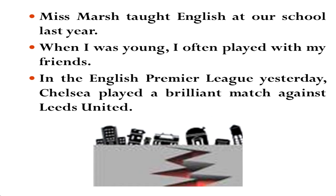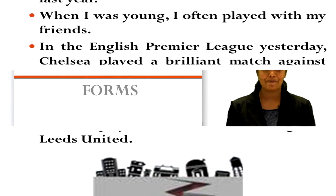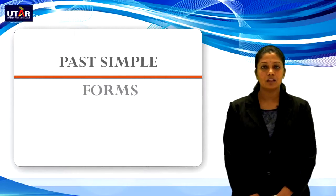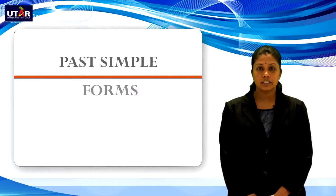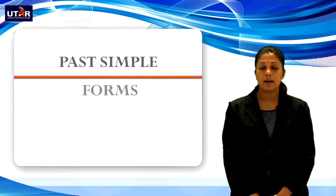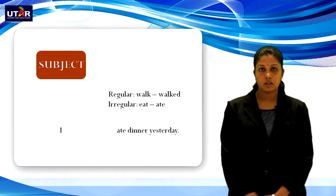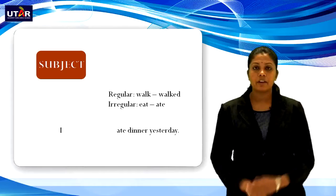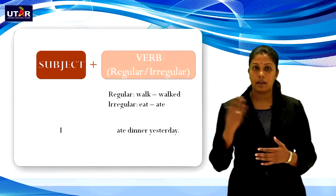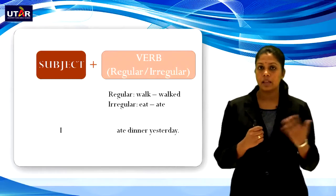Now let's look at the forms and functions for past simple tense. In order to construct a sentence in past simple tense, you should have a subject and a verb in past form. For past form, we have two types of verbs: regular and irregular.